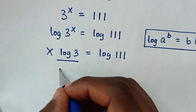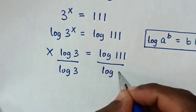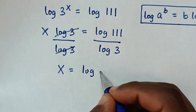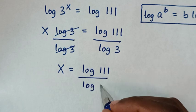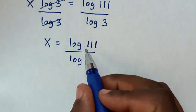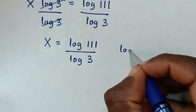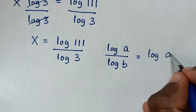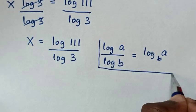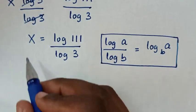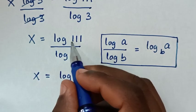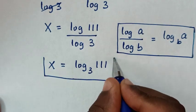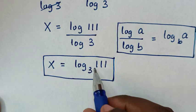Then we divide by log of 3 on both sides, so this and this will cancel. Then it will be x is equal to log of 111 over log of 3. Using the change of base formula, log of a over log of b equals log base b of a. So our final answer is x is equal to log of 111 base 3.